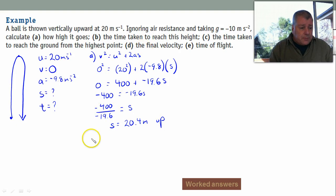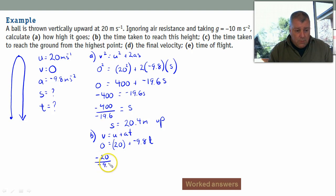What about the time taken? That's part B. We use V equals U plus AT. Remember, there may be more than one way of doing this. Once we know four things, we can solve it in a variety of ways. Putting our values in: 0 equals 20 plus minus 9.8T. So this becomes minus 20 divided by minus 9.8 equals T. T equals 2.04 seconds. I've missed a line of working there, but hopefully you understand what I've done.